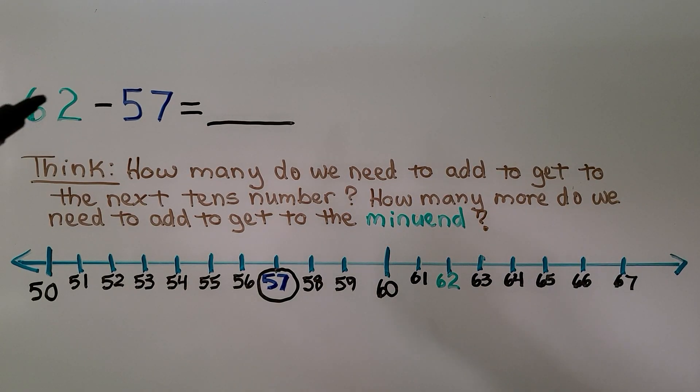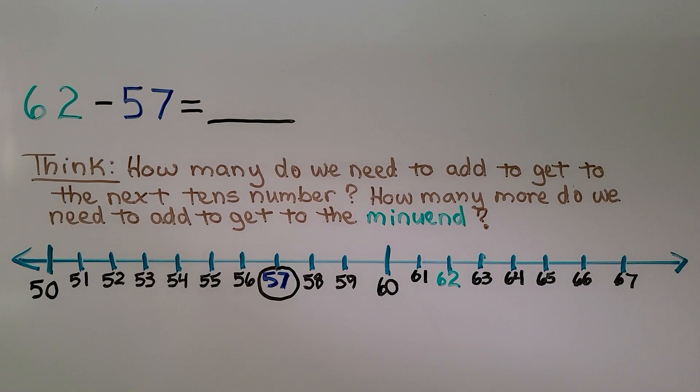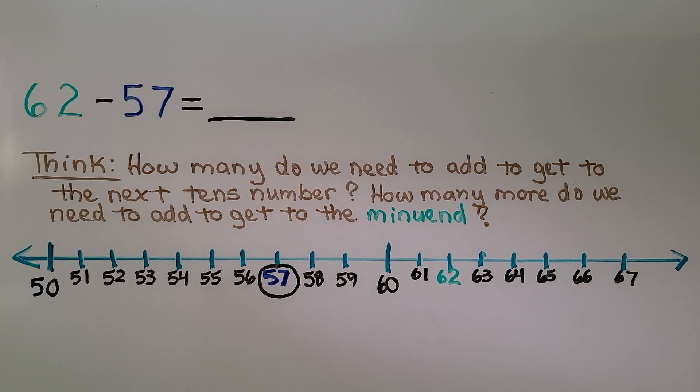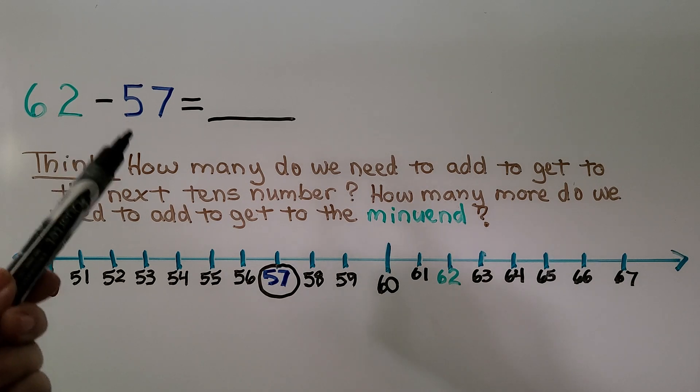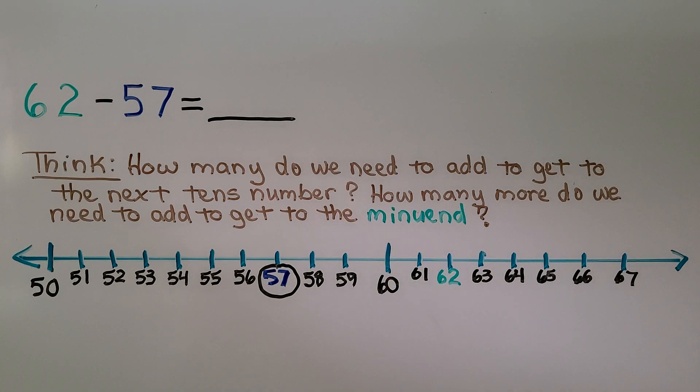Here we have 62 minus 57. And we think, how many do we need to add to get to the next tens number? If we start at 57, how many do we need to add to get to the next tens number? Here's 57. The next tens number is 60.